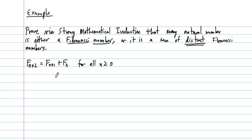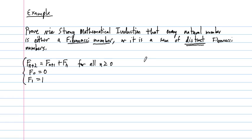This recursive definition is not enough to define the entire sequence because you need starting points for your recurrence relation. Our assumptions are that F0 = 0 and F1 = 1. Let's write down the first few terms because we're going to prove a statement about natural numbers in relation to these Fibonacci numbers, and we need to know which natural number is the first one that is not a Fibonacci number.